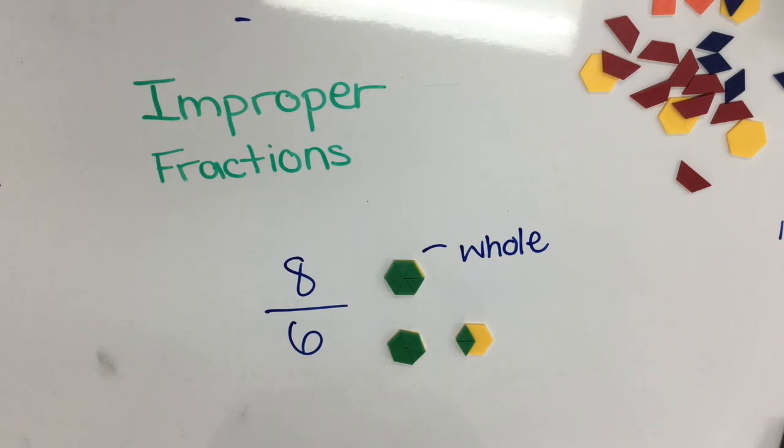As you can see we've built our eight-sixths. We have one whole with two-sixths left over.